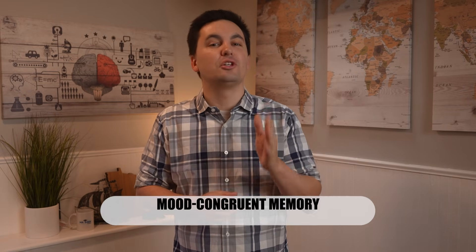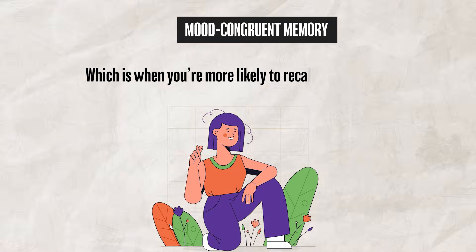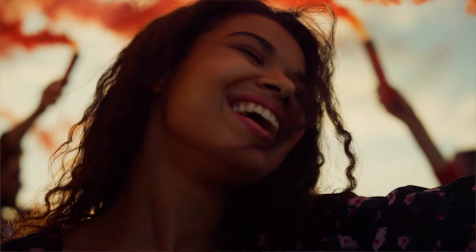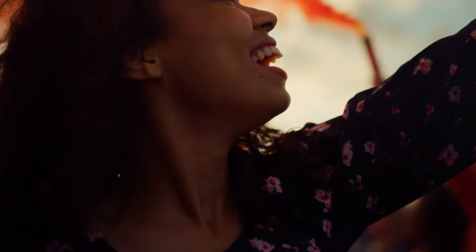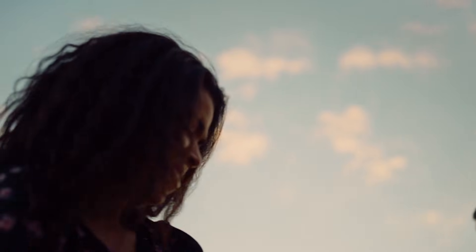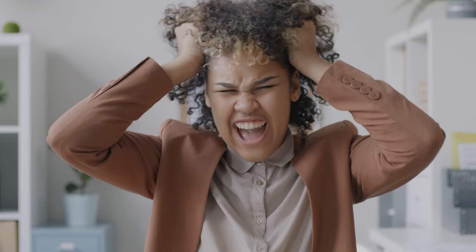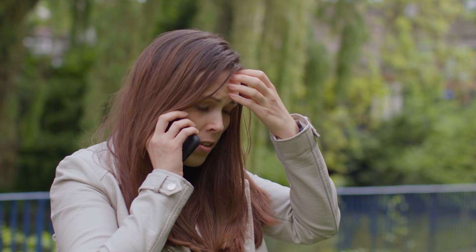Another type of memory you want to be familiar with is mood-congruent memory, which is when you're more likely to recall memories that match your current mood. For example, when you are in a good mood and feeling happy, you're more likely to remember other happy experiences. But if you are mad, you're more likely to remember more negative experiences.